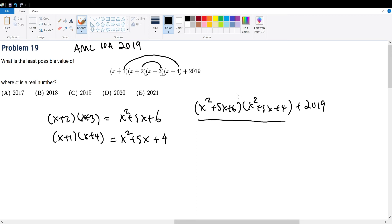because we see here that 6 and 4 are a difference of 2, and they're separated by the number 5, which is 1 away from both 6 and 4, which is very suspicious. So let's try to further break this down. This can become x squared plus 5x plus 5 plus 1 times x squared plus 5x plus 5 minus 1 plus 2019.